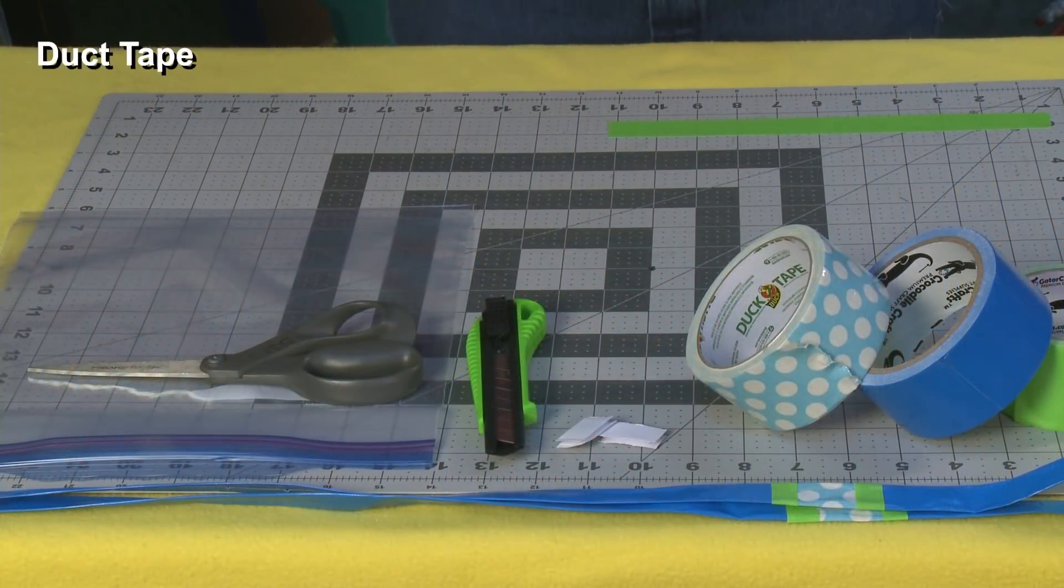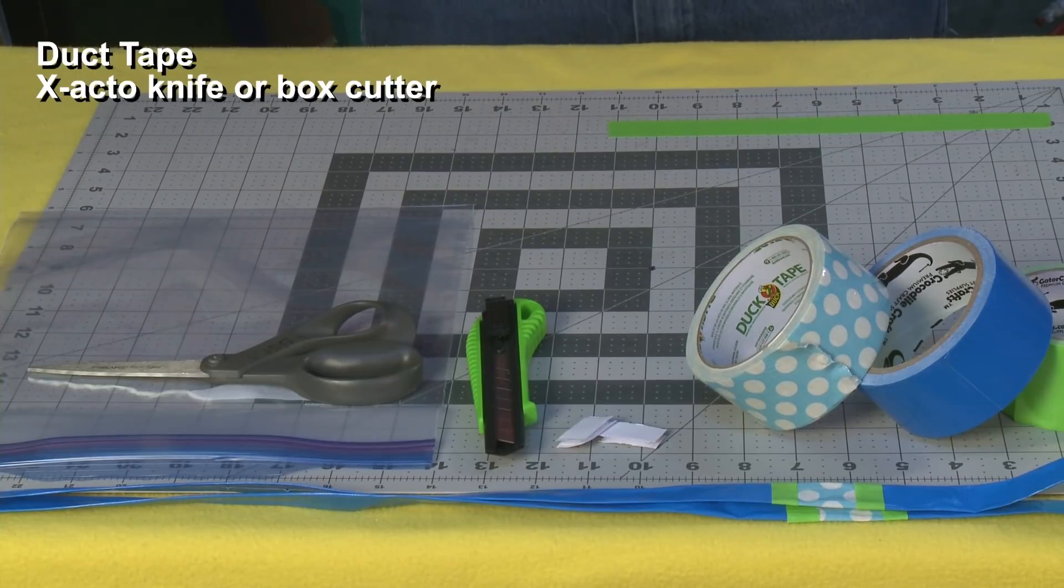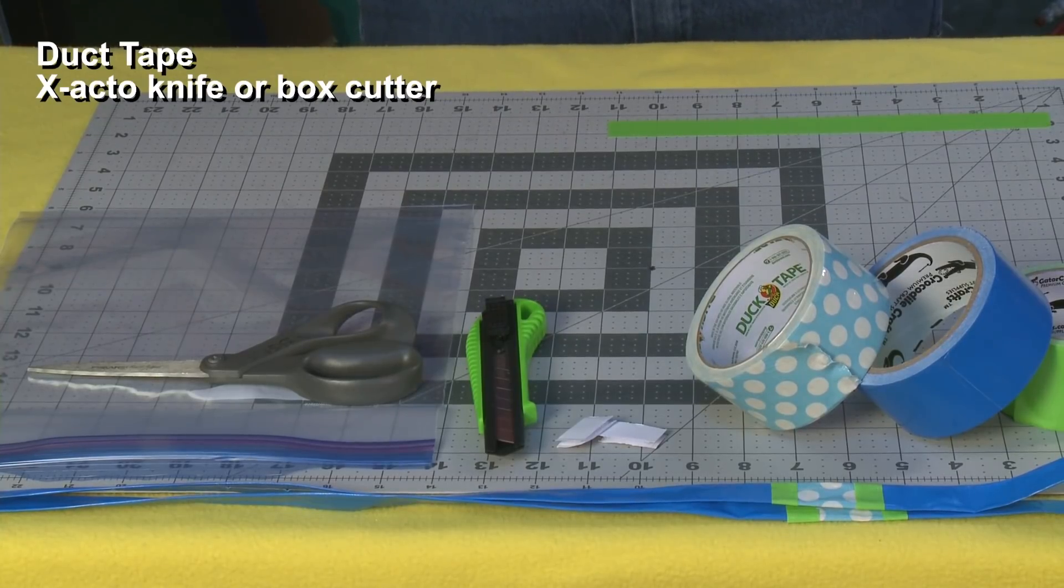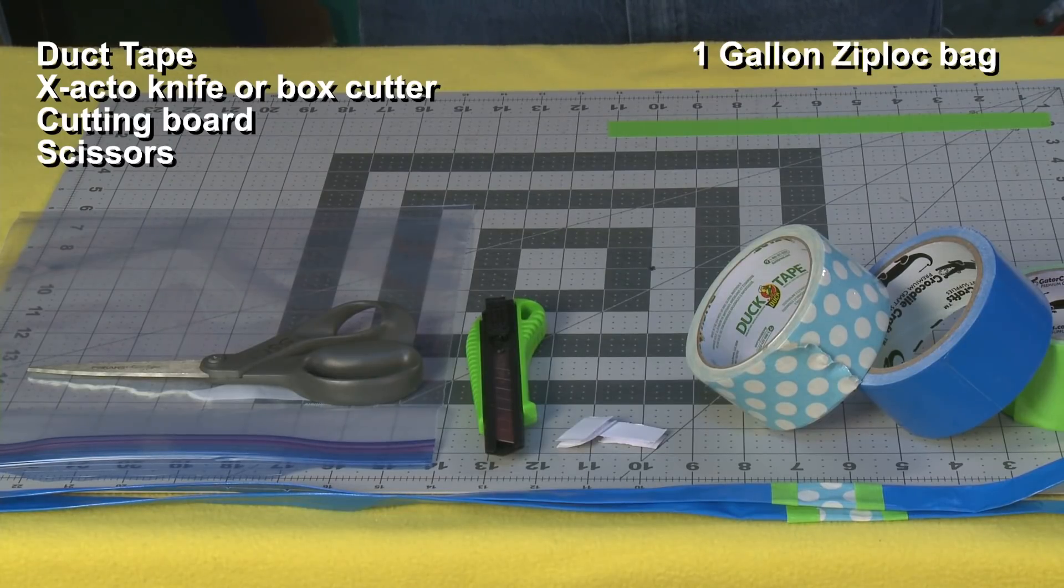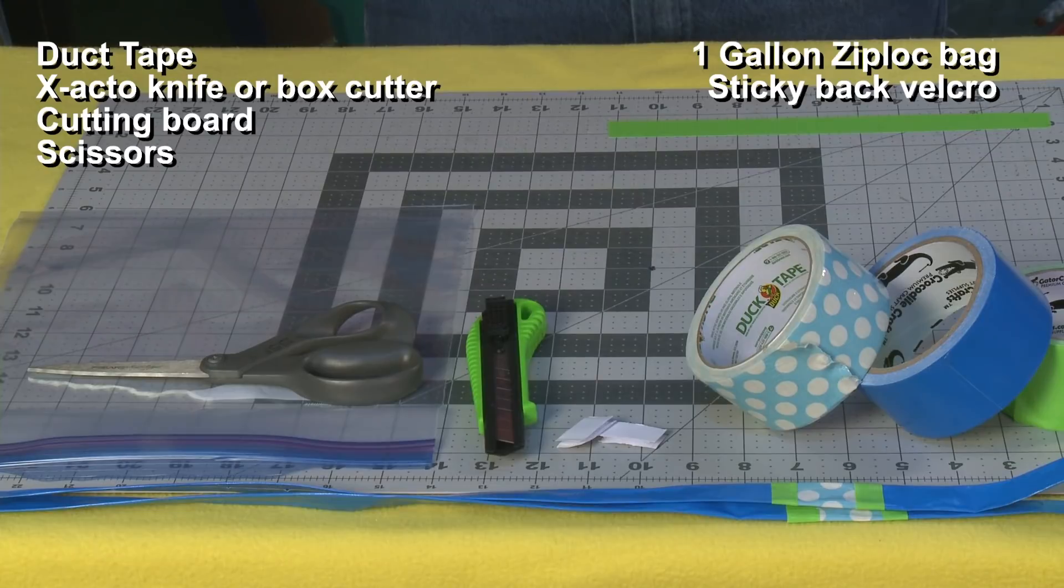For this project you'll need duct tape, an exacto knife or box cutter, cutting board, scissors, one gallon Ziploc bag, sticky back velcro, and in this case I have pre-made a 48 inch strap.